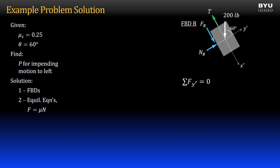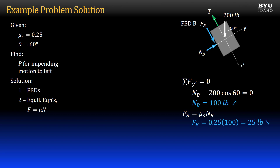I sum forces to zero in the Y prime direction to get normal force B: it is 100 pounds in the positive Y prime direction. Using the static friction equation, the friction force on block B is 0.25 times 100 pounds, so 25 pounds acting in the positive X prime direction. Note that this equation always gives a positive value, so the direction must be correct on the free body diagram. Summing forces in the X prime direction, I find the tension in the cable is 198.2 pounds acting in the negative X prime direction.